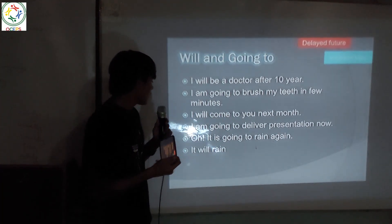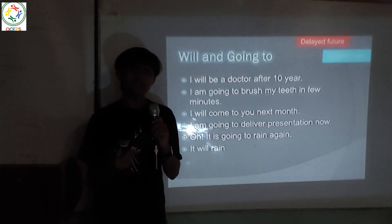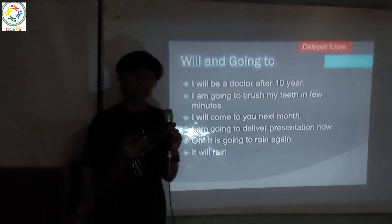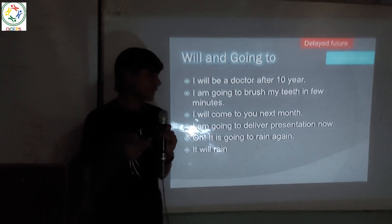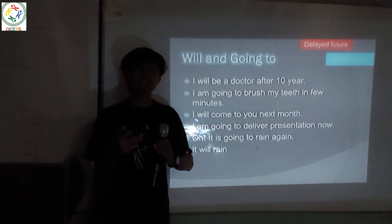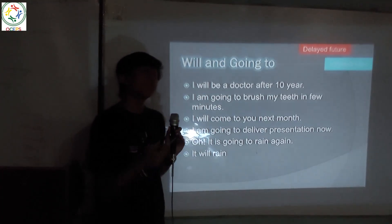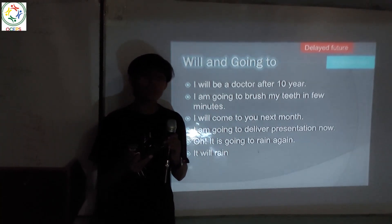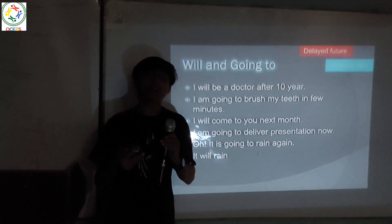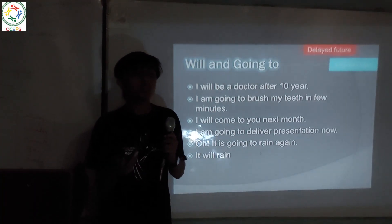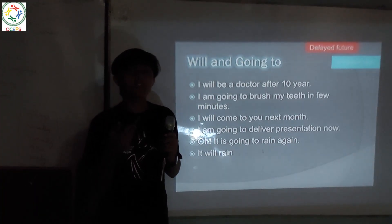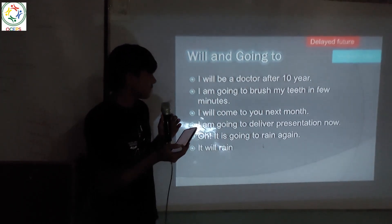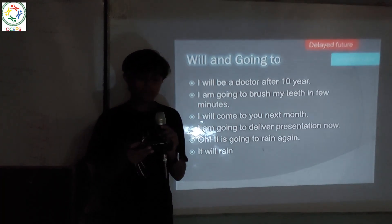Another sentence: 'Oh, it is going to rain again' — meaning it is immediately going to rain. But if we want to express a delayed form, we can say 'It will rain.' Another point about 'will' is that it is not confirmed. 'It will rain' — we don't know exactly when. It may rain tomorrow, the day after tomorrow, or after two or three hours. It is delayed and the exact time is unknown.